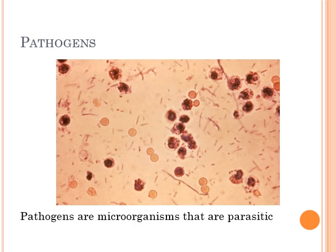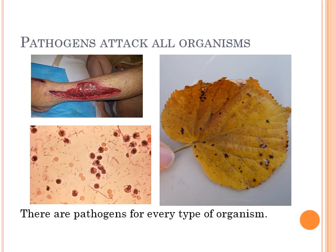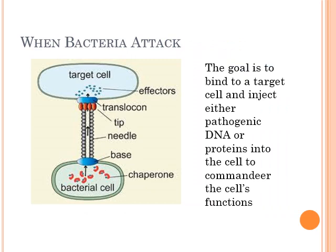The flip side of that are pathogens — probably what you most associate with bacteria. Pathogens are microorganisms that are parasitic: they get a benefit while the other organism is harmed. There are pathogens for every single type of organism out there. If it's alive, it has a pathogen — you have them, plants have them, and even bacteria have pathogens that prey on them.